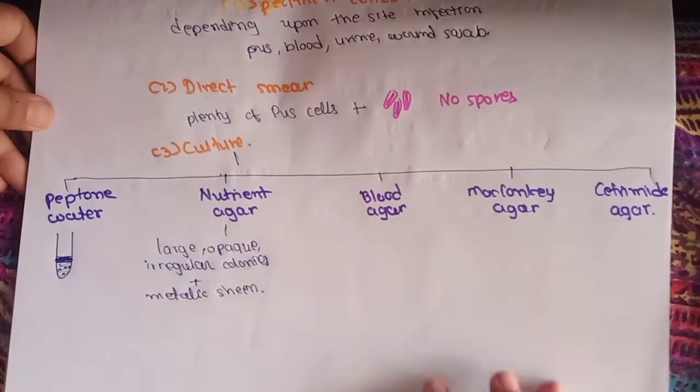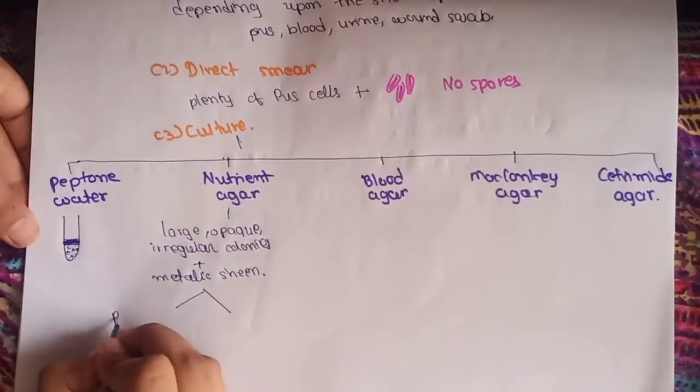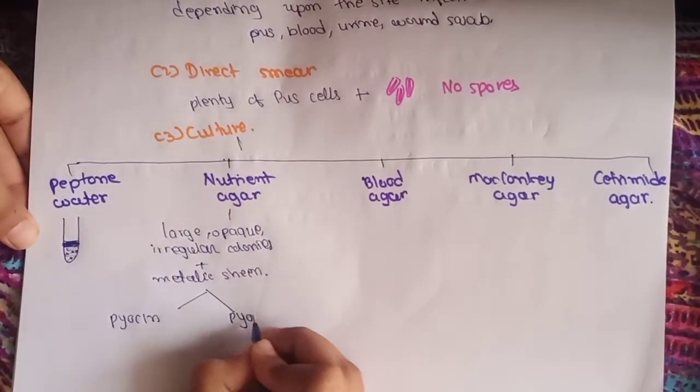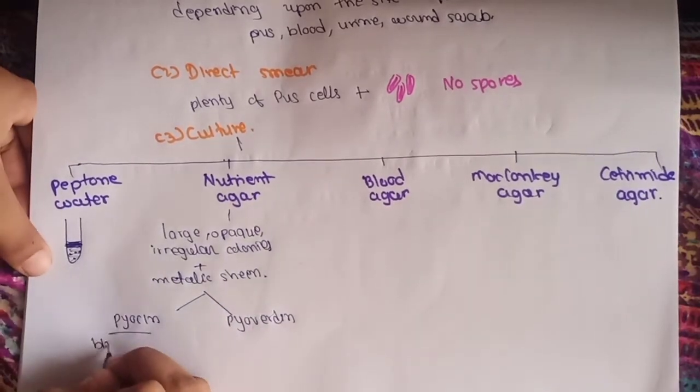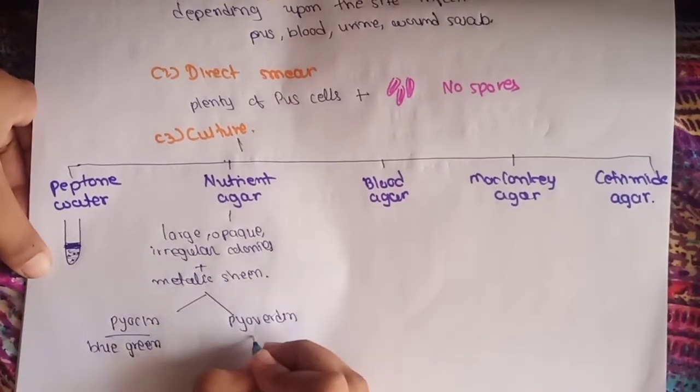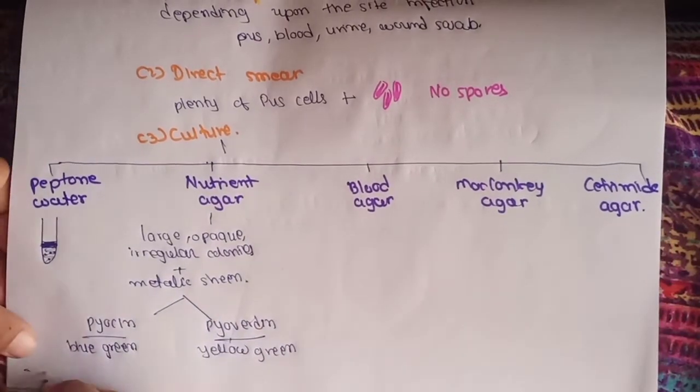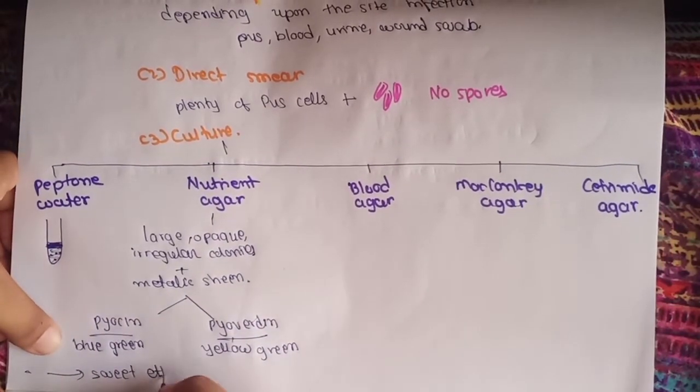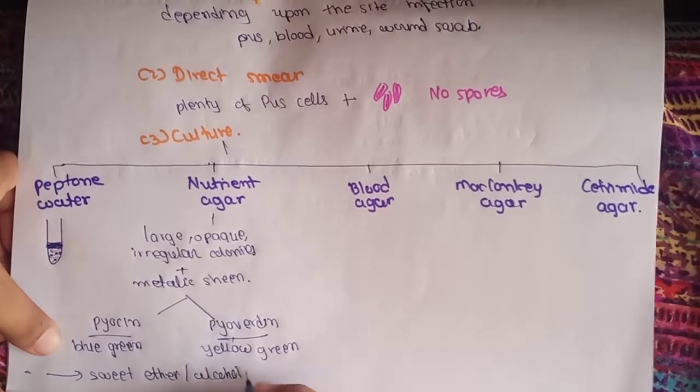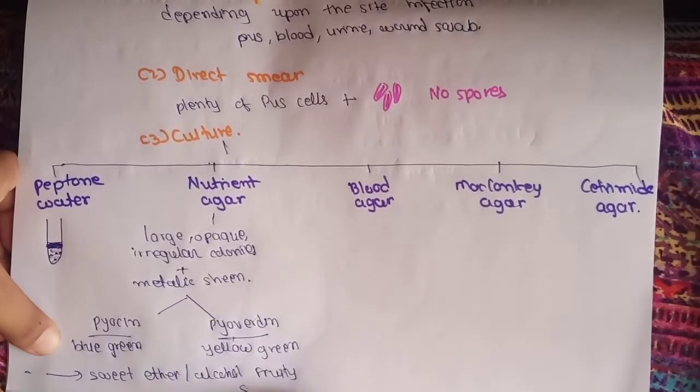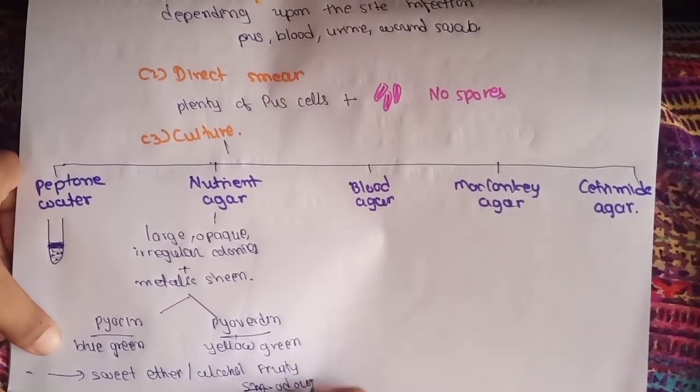Some strains make pigments like pyocyanin and pyoverdine. Strains containing pyocyanin pigment will give blue-green colonies, and strains containing pyoverdine will give yellow-green colonies. These colonies have a sweet ether or alcohol fruity odor.